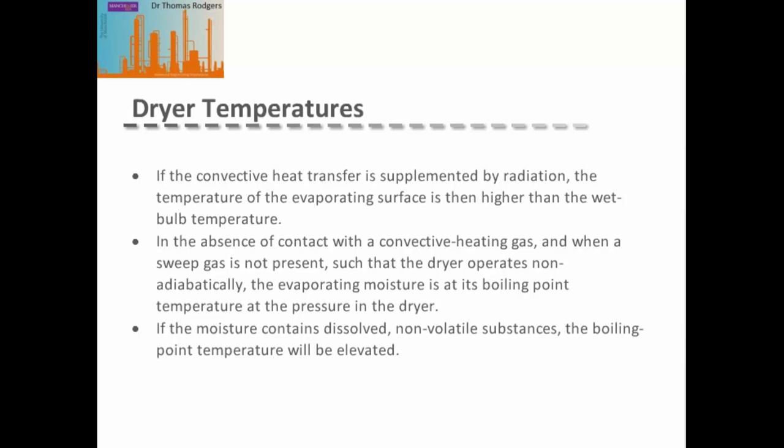If convective heat transfer is supplemented by radiation, the temperature of the evaporating surface can be higher than the wet bulb temperature. In the absence of a convective heating gas and sweep gas, such that the dryer operates non-adiabatically, the evaporating moisture is at its boiling point at the pressure inside the dryer. If the moisture contains dissolved non-volatile substances, the boiling point temperature can be elevated.